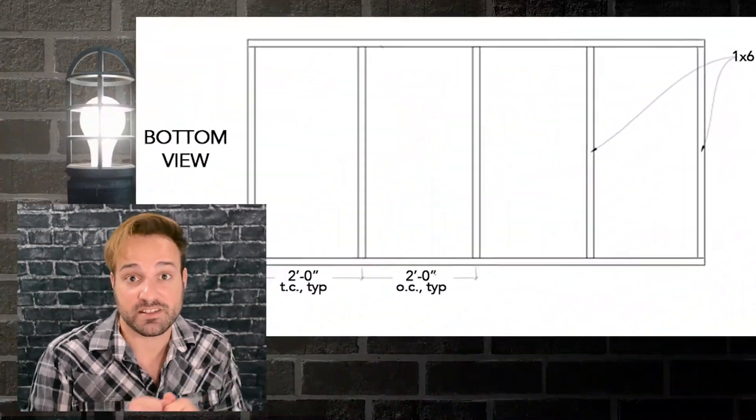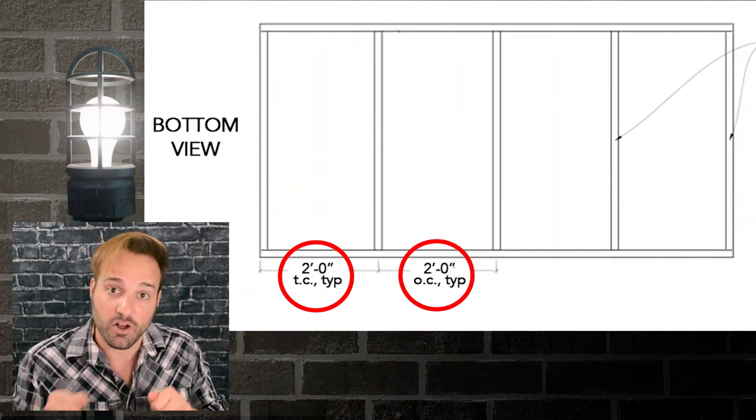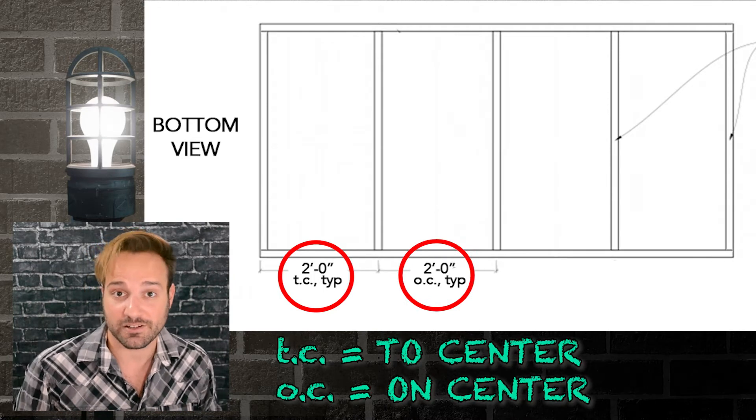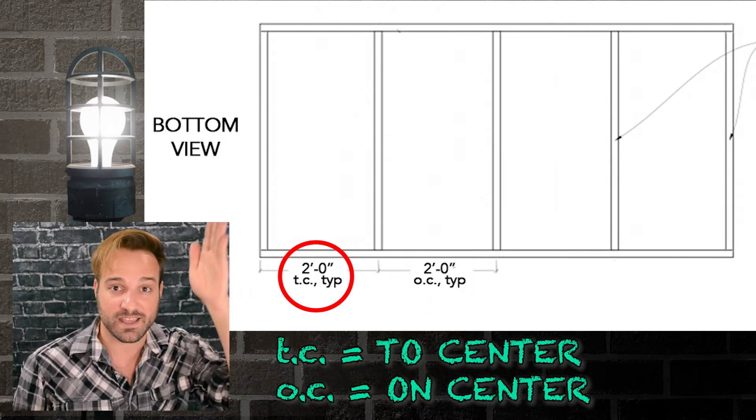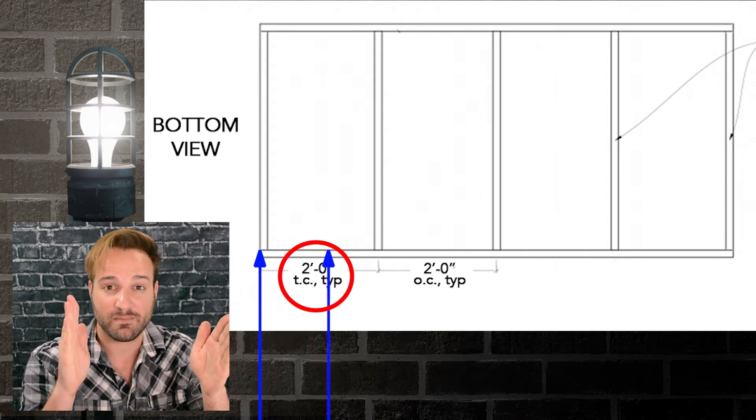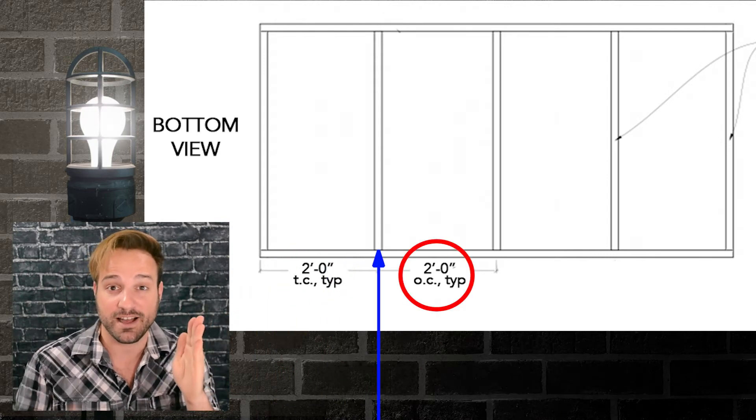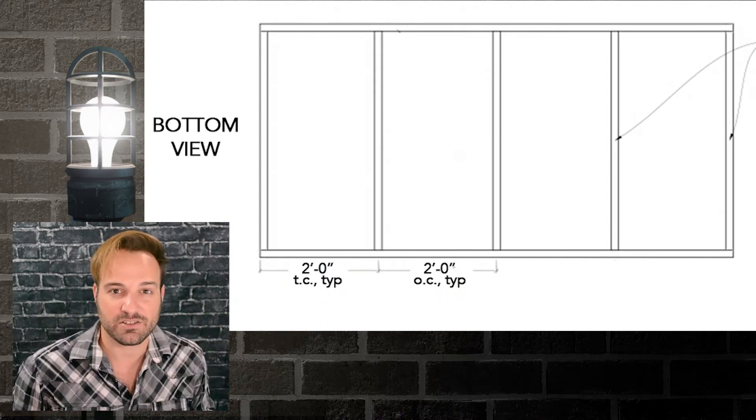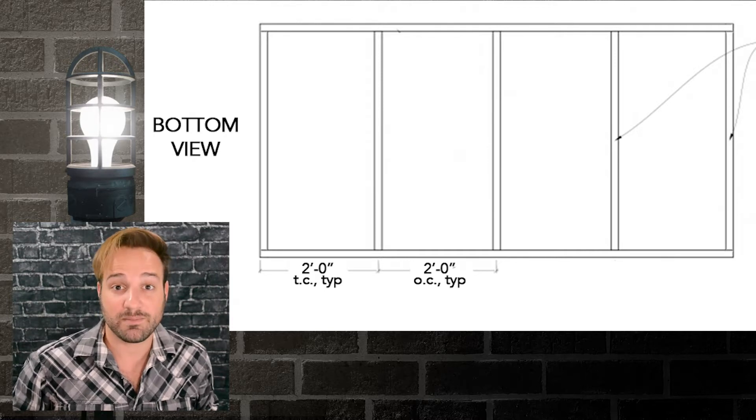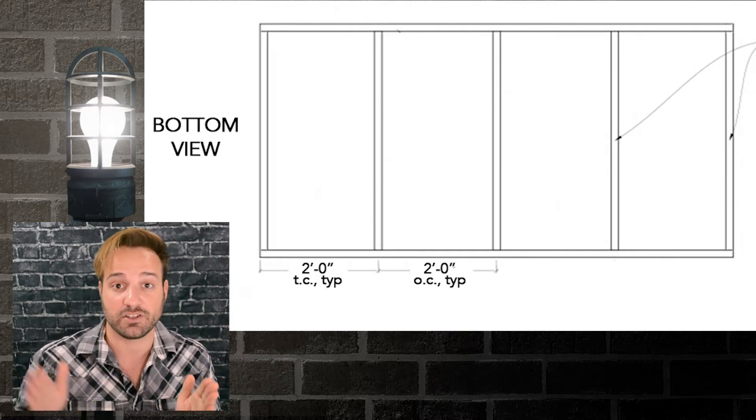So, now we have these measurements, this two feet TC and two feet OC. That means two feet to center, two feet on center. To center means from the edge of the one piece to the center of that middle toggle. On center means from the middle of one toggle to the middle of the other. We don't need that dimension for cutting the pieces. We need that dimension because that's how the layout is going to go.